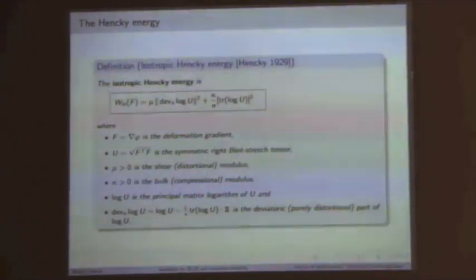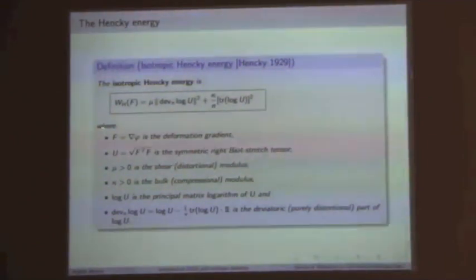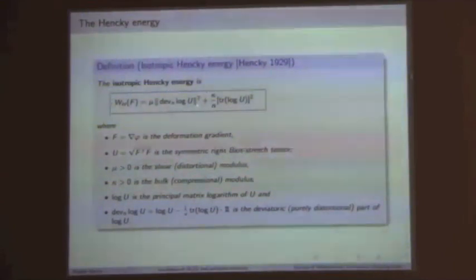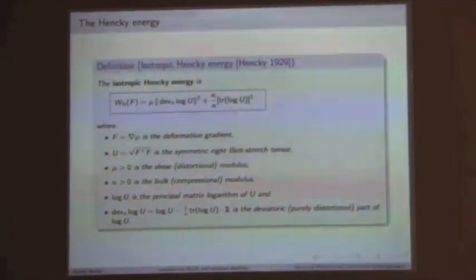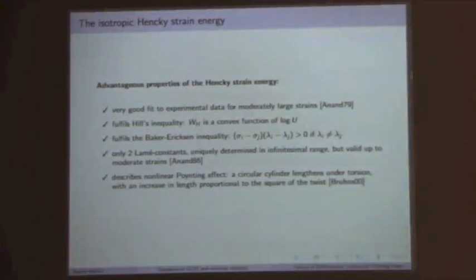The energy function we are primarily interested in is the isotropic Hencky energy, introduced by Heinrich Hencky in 1929. It looks very much like the linear energy: we simply replace epsilon, the linear strain tensor, with log U, which is the principal logarithm of the right Biot stretch tensor, also called the Hencky strain or true strain tensor. Again, we only have two parameters, as in the linear case. The Hencky strain energy has some very good properties — it is a very good fit to experimental data for up to moderately large strains, around 20 to 40 percent elongation for rubber-like materials.